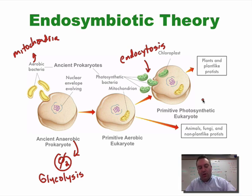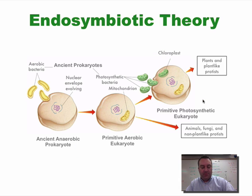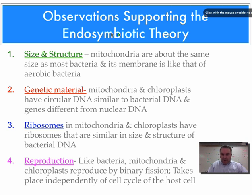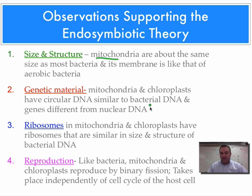What is the real hard evidence to back up this theory? There are basically four prongs. Number one is the size and structure of the bacteria. Mitochondria and chloroplasts are about the same size as most bacteria, and in fact the membrane is almost identical to that of aerobic bacteria we find in nature.